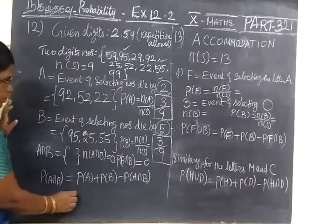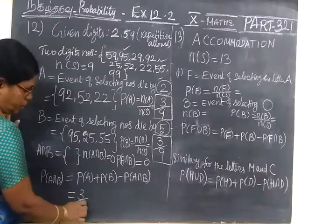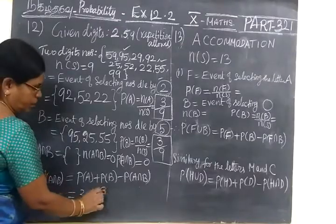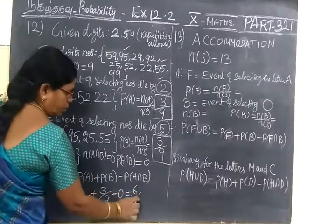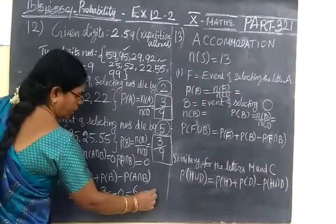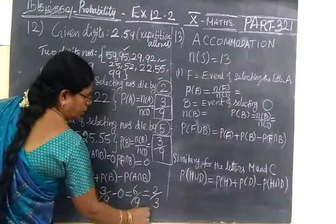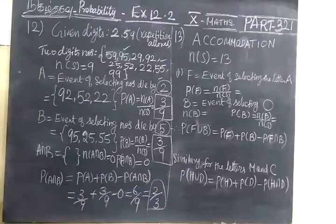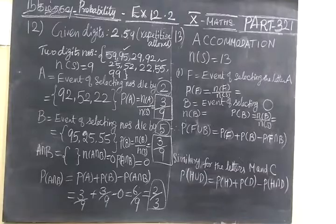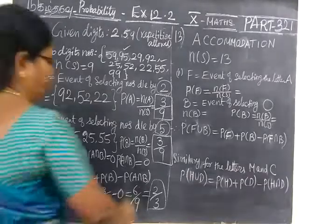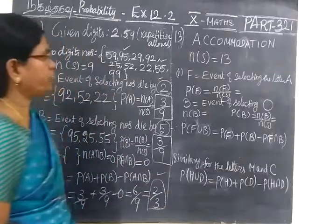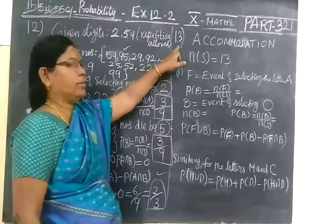Now you take and write the answer here. P(A) is 3 by 9, P(B) that also 3 by 9, then minus 0. So 6 by 9. If you cancel you get 2 by 3. So the final answer is 2 by 3. So for the 12th question the answer is 2 by 3. So this one is correct. So next we see the 13th question.